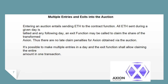Multiple entries and exits into the auction: Entering an auction entails sending ETH to the contract function. All ETH sent during a given day is tallied, and on any following day, an exit function may be called to claim the share of the transformed Axion. Thus there are no late claim penalties for Axion obtained via the auction. It's possible to make multiple entries in a day, and the exit function shall allow claiming the entire amount in one transaction.